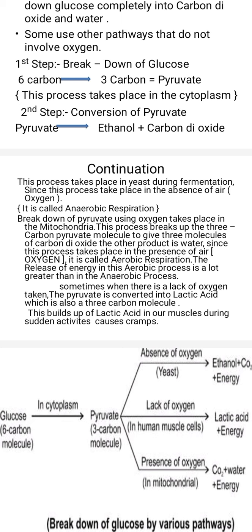Breakdown of pyruvate using oxygen takes place in the mitochondria. This process breaks up the three-carbon pyruvate molecule to give three molecules of carbon dioxide, and the other product is water. Since this process takes place in the presence of oxygen, it is called aerobic respiration. The release of energy in aerobic respiration is much greater than in the anaerobic process. Sometimes when there is a lack of oxygen, pyruvate is converted into lactic acid, which is also a three-carbon molecule. This build-up of lactic acid in muscles during sudden activity causes cramps.